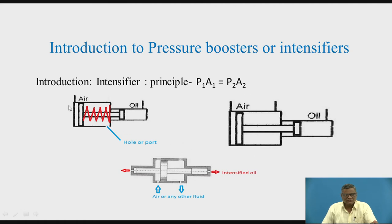The difference in the areas is used to get the difference in pressure. The principle on which it works is P1 A1 equals P2 A2, where P1 is the lower pressure, A1 is the larger area of the piston on the left-hand side, P2 is the larger pressure, and A2 is the smaller area on the right-hand side.